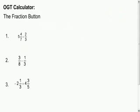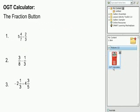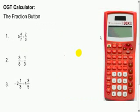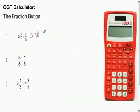The fraction button is the ABC button. You can use this button to plug fractions directly into the calculator. To enter 5 and 4 sevenths, you are going to first type the 5, then hit your fraction button, then plug in the numerator 4, then hit your fraction button again, then enter the denominator 7. The calculator is going to read that as 5 and 4 sevenths.